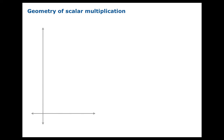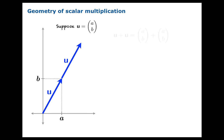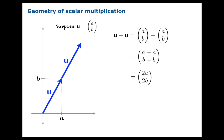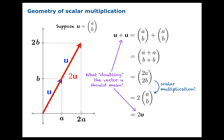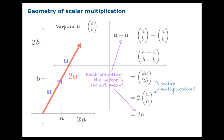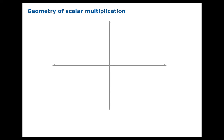Let's take a look at what scalar multiplication is all about — this is really a motivating example. Suppose you had a vector with components a and b, and then you add u to itself. According to vector addition, this should just be the vector a plus a, b plus b, which at the level of components we recognize as 2a and 2b. We can pull the two out by our definition of scalar multiplication. This is very natural: the vector 2u is what you get literally by doubling the vector u in the sense that you're adding it to itself. That's exactly what you would hope 2u means.